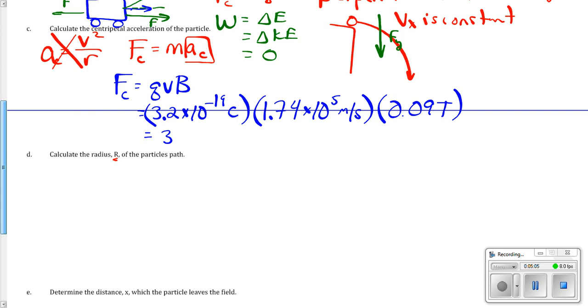That number is 5.0 times 10 to the negative 15 newtons. Now, that's the centripetal force. We're asked to solve for the centripetal acceleration. Right. F equals MA.